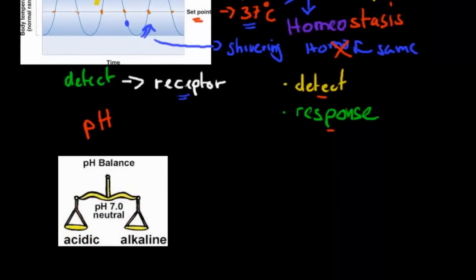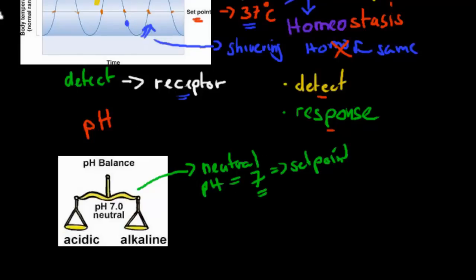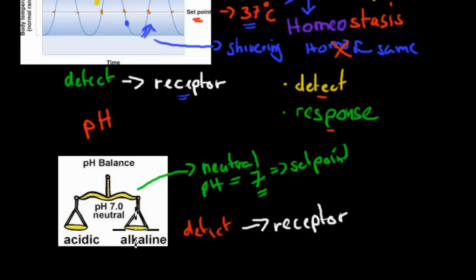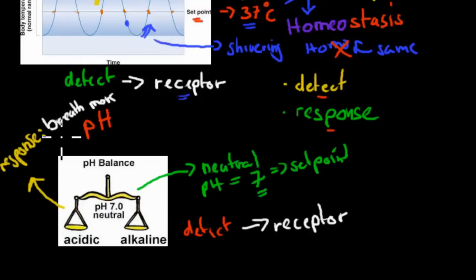Now, pH. For example, if we have a pH of 7, that's ideal for humans in most of the body — except for our stomach, a neutral pH of around 7 is good. So that's our set point. Detection happens through receptors as well, just like the previous example. If the pH is too low — too acidic — the response would be to actually breathe more. We breathe out carbon dioxide, and breathing out CO2 decreases our acidity, so if we have too low pH, breathing more brings it back up.